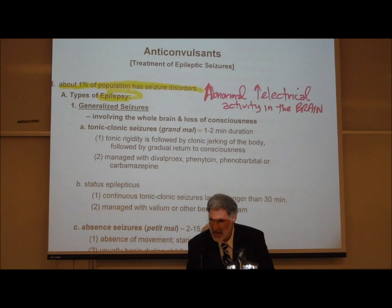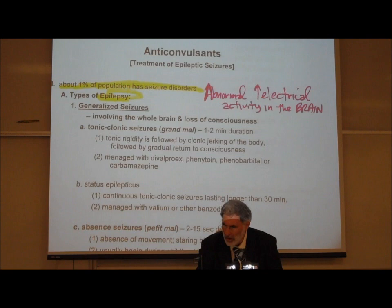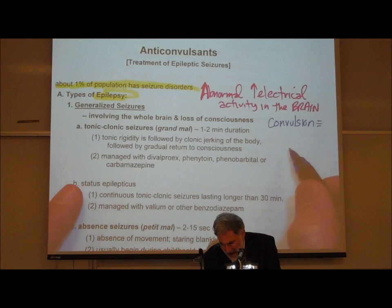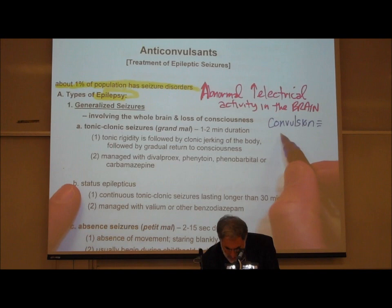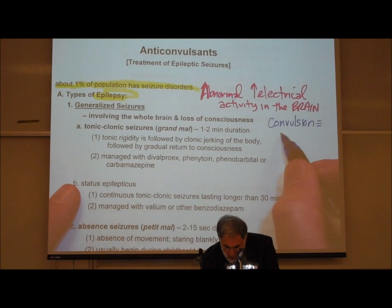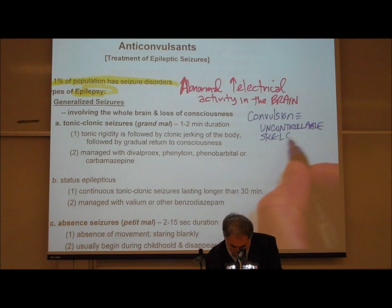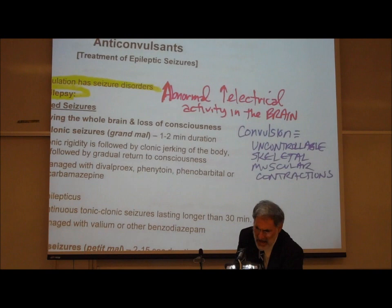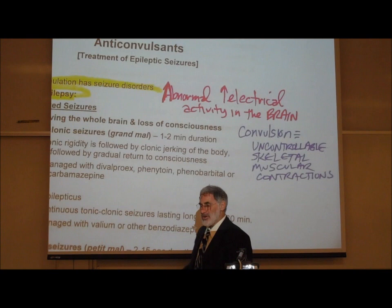So if a seizure is increased electrical activity in the brain, what does the word convulsion mean? Convulsion is associated with abnormal activation of skeletal muscles. A convulsion is when seizures — the increase in electrical activity in the brain — lead to uncontrollable skeletal muscular contractions. So a seizure does not necessarily mean there are uncontrollable muscular contractions; that's called a convulsion. But a convulsion is caused by, or associated with, a seizure.